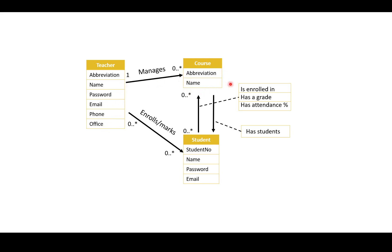I can create a new course, for example SDJ2 or CEP2. SDJ2 is the abbreviation and the name is Software Development with UML and Java 2. So the teacher manages this one. I have my multiplicity: each course is managed by exactly one teacher, and a teacher can manage zero to many courses. A teacher can also enroll students into a course, so a student can be enrolled by zero to many teachers because the student can be enrolled in multiple courses, and the teacher can enroll zero to many students.